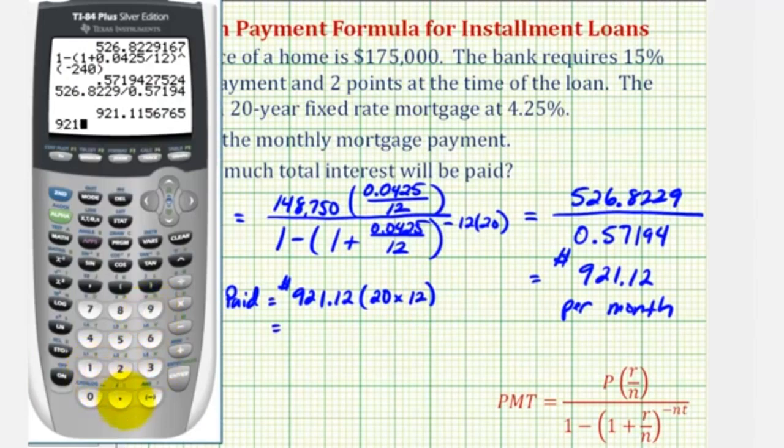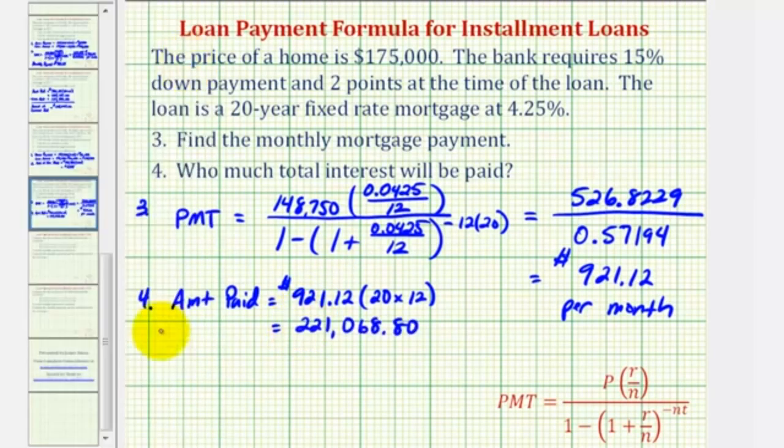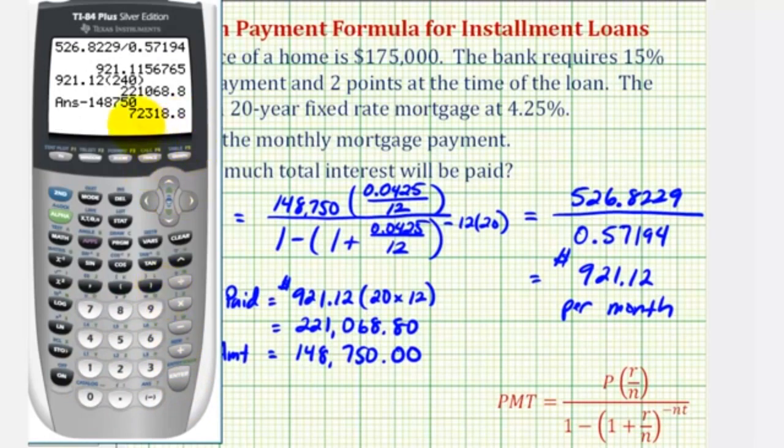So 921 dollars and 12 cents times 240 equals 221,068 dollars and 80 cents. Now we're going to subtract the loan amount, which was 148,750 dollars. Since we already have the total amount paid in the calculator, we can just press minus 148,750. And so the total interest would be 72,318 dollars and 80 cents.